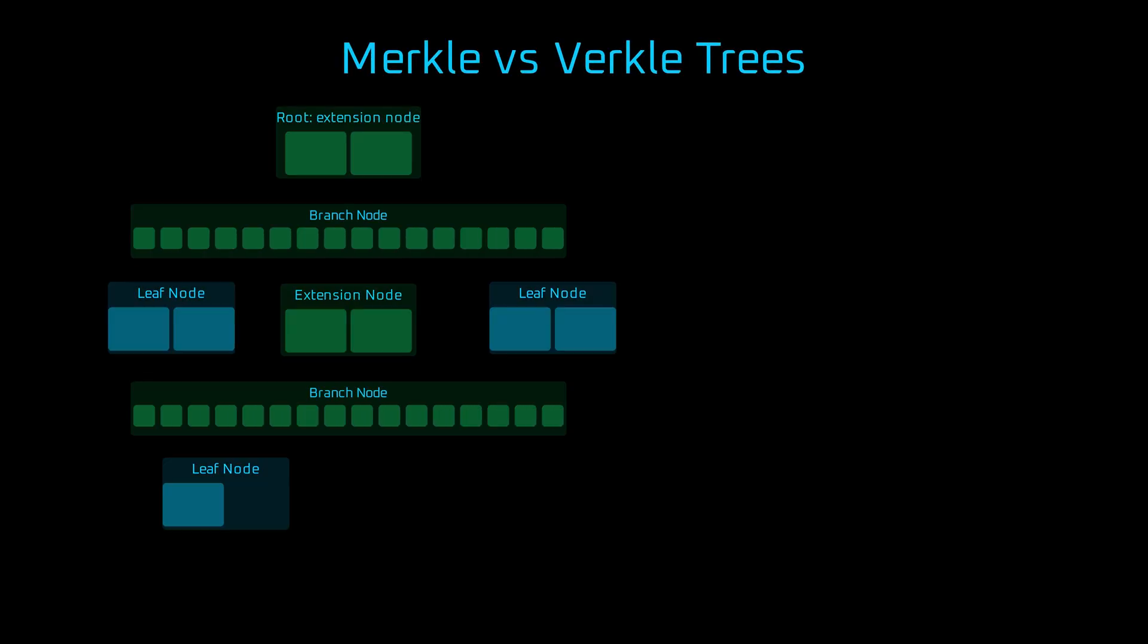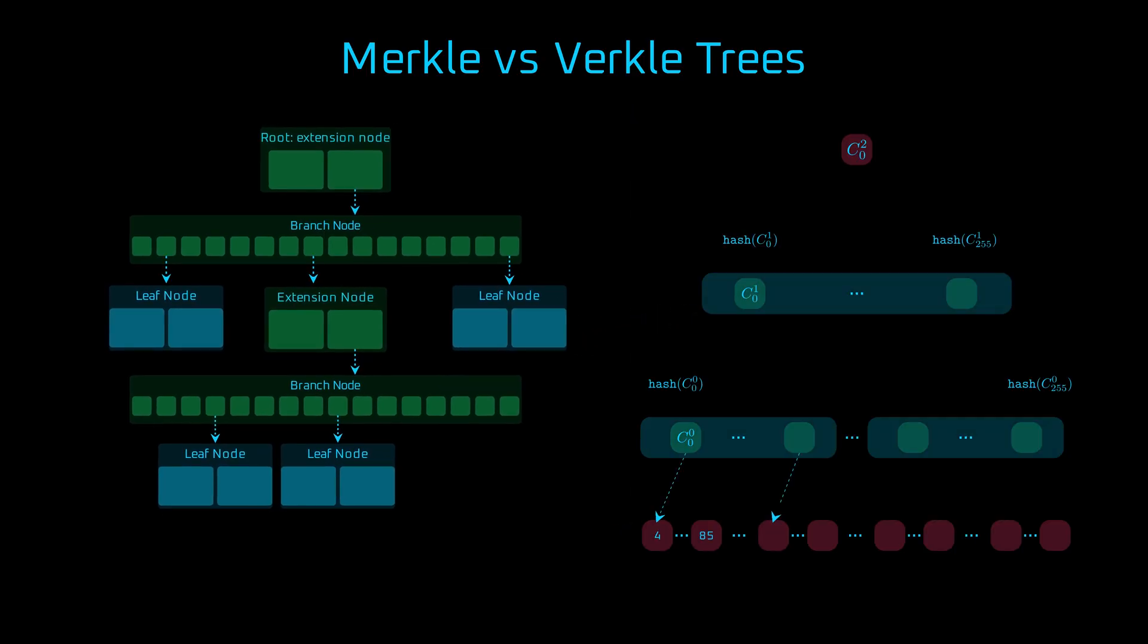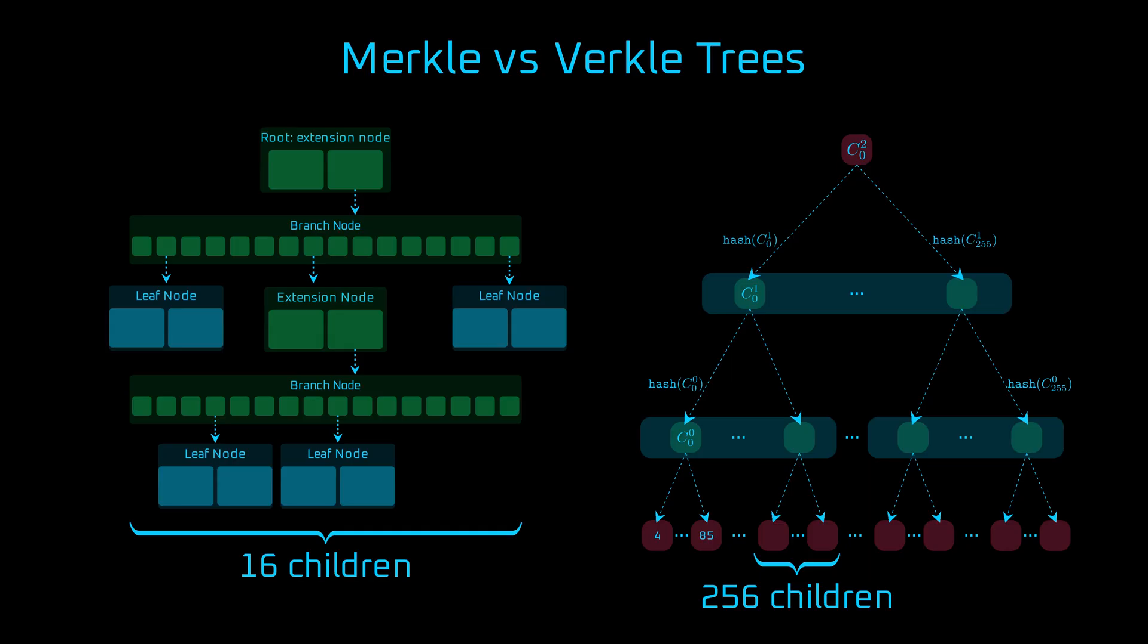So how do Merkle trees compare to verkle trees in real-world usage? First, let's talk about depth. In a standard Merkle tree, we typically need about nine levels to represent Ethereum's state, which has around half a million leaves. In contrast, a verkle tree with an arity of 256 can represent that same state in just four levels. That's because verkle trees are much wider. Each node can have up to 256 children.